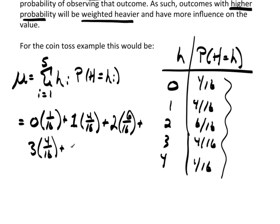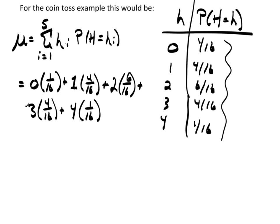Plus, the last one is a 4 times the probability of observing a 4, which is 1/16th. So, now I need to add these together. This is going to be 0 plus, 1 times 4/16ths is 4/16ths. Plus, 2 times 6, that's 12/16ths.